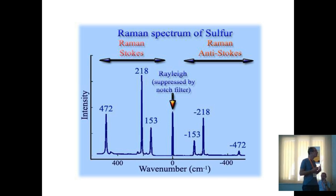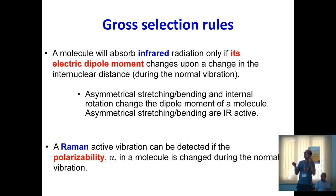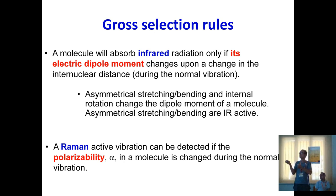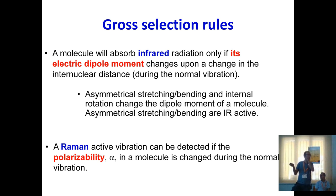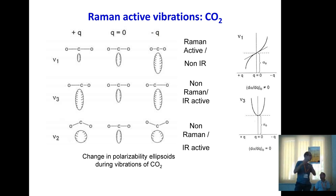The infrared activity requires a change in the electric dipole moment during vibration. Asymmetric stretching and bending modes of internal coordinates that produce a change in dipole moment will be infrared active. For Raman, what is needed is a change in polarizability during the vibration. Consider the CO₂ molecule: the polarizability can be represented as an ellipsoid.